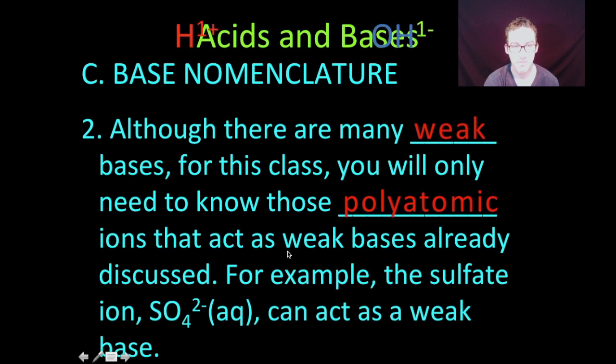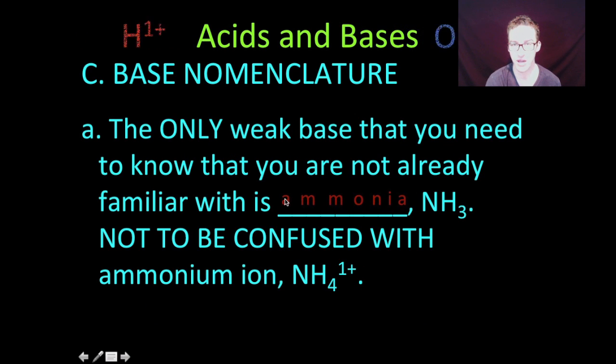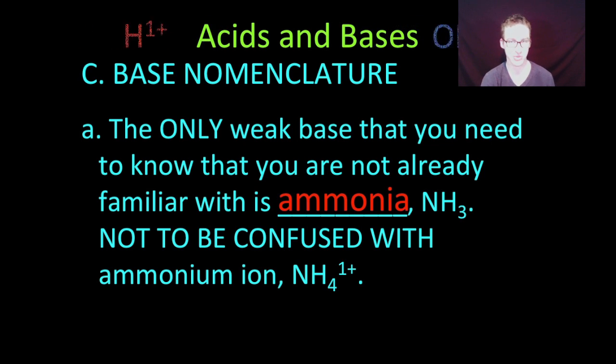Okay, and then lastly, just recognize there are many, many weak bases. For this class, you will only need to know those polyatomic ions that act as weak bases that we've already discussed. For example, sulfate ion acts as a weak base. So nothing really new here. The only thing you need to watch out for is a weak base that's commonly used called ammonia, NH3. And that's sort of the common name that is thrown around. Sort of like how water isn't called dihydrogen monoxide. We just call it water. And a lot of times, students will confuse ammonia with ammonium ion. So just be on the lookout. This is a really common weak base that we'll use a lot in the lab.